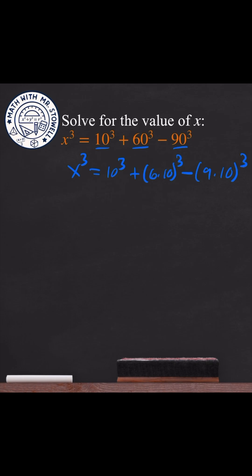Using the laws of exponents, we end up with x³ = 10³ + 6³ × 10³ - 9³ × 10³.